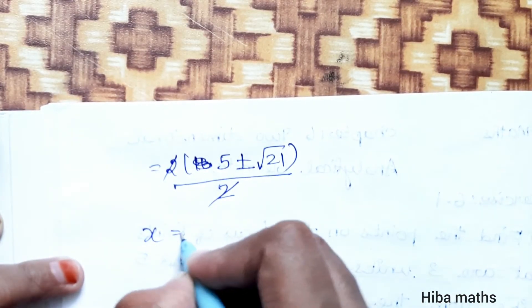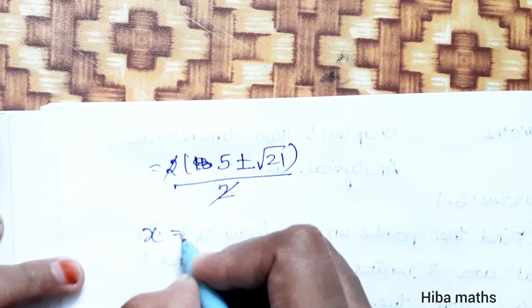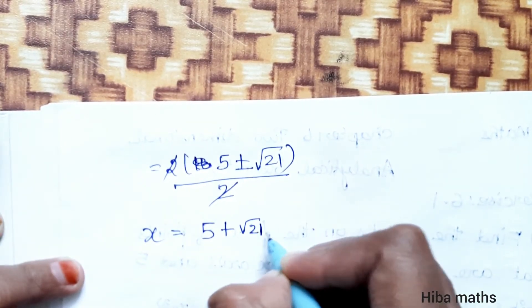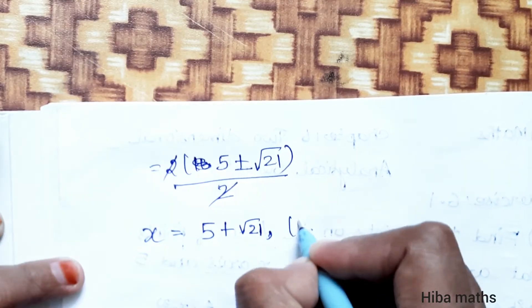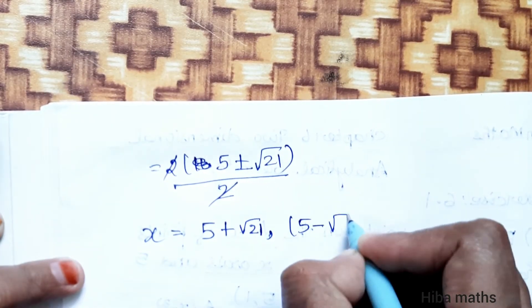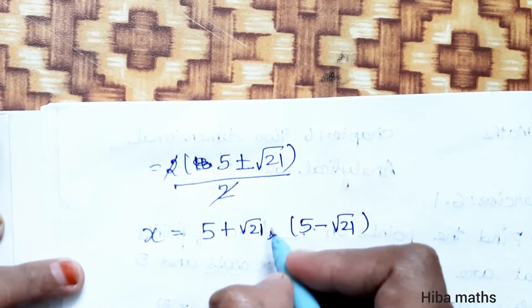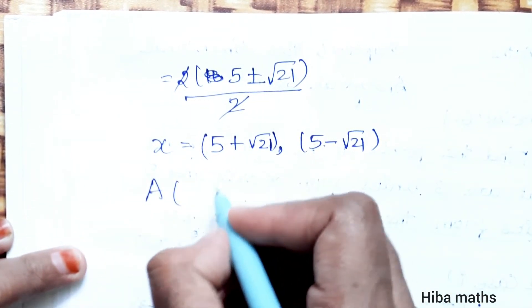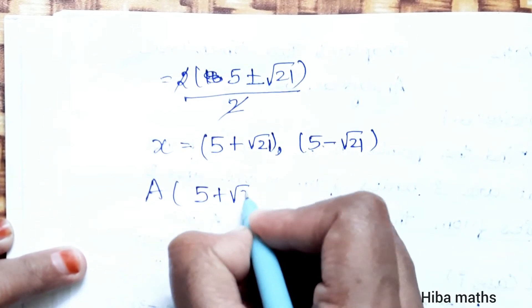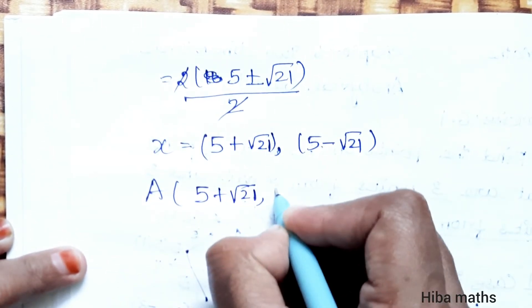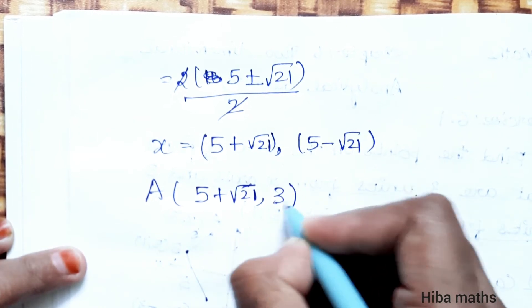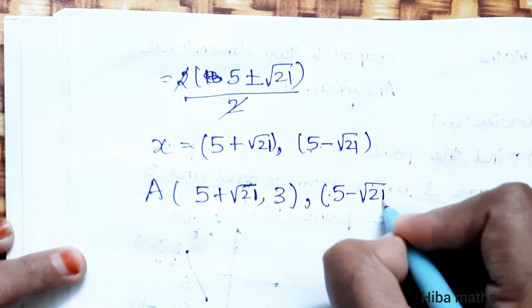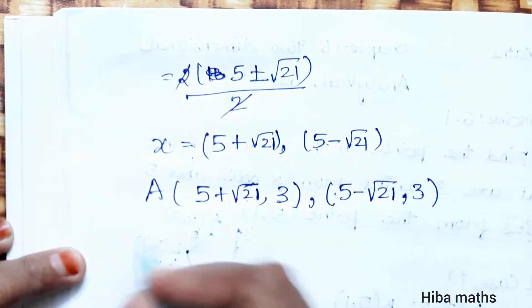So the x values are: first, 5 plus root 21; second, 5 minus root 21. The points for Case 1 are (5 plus root 21, 3) and (5 minus root 21, 3).